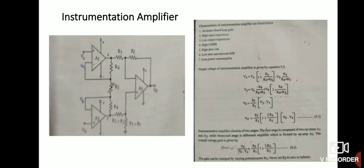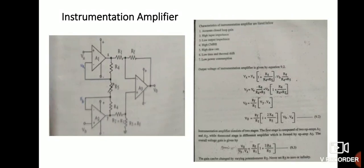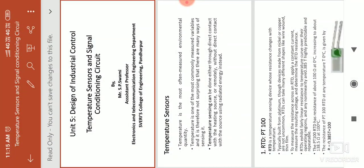The instrumentation amplifier consists of two stages. The first stage has two op-amps A1 and A2, and the second stage is a difference amplifier using op-amp A3. The overall voltage gain is: V0 / (Vb − Va) = (Rf/R1)(1 + 2R4/R5). This gain can be changed by varying the potentiometer R5. In this lecture, we discussed different temperature sensors, transducers, signal conditioning circuits, and the instrumentation amplifier. Thank you.